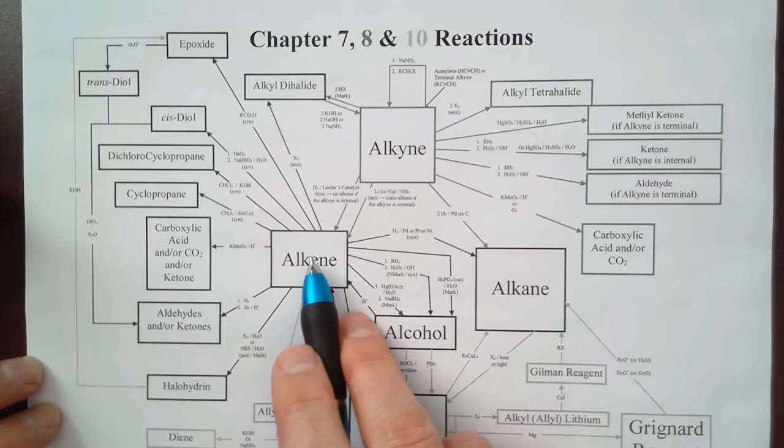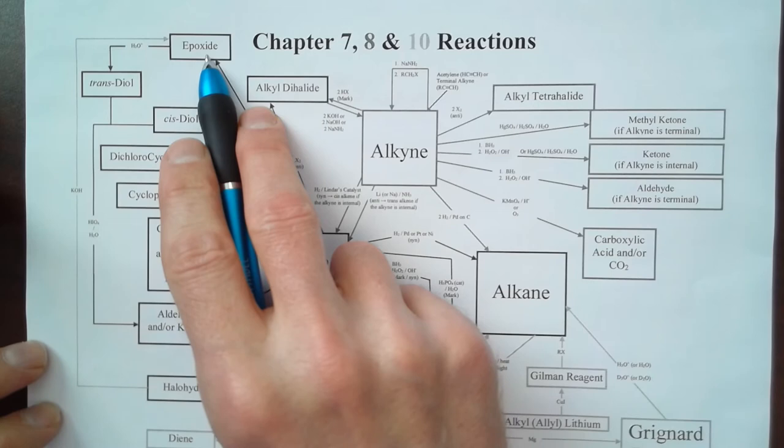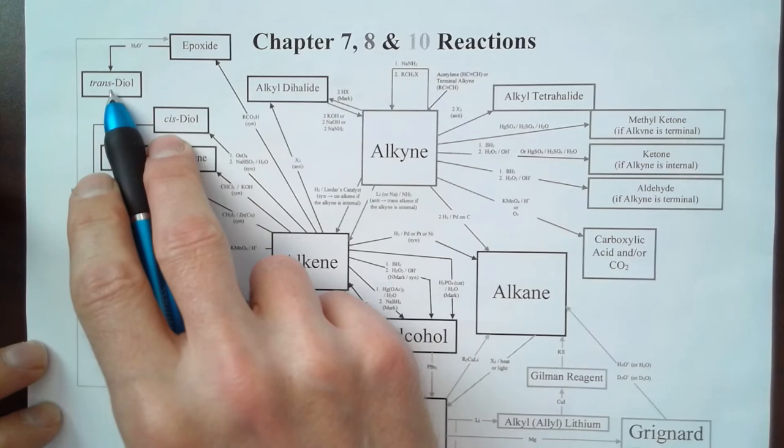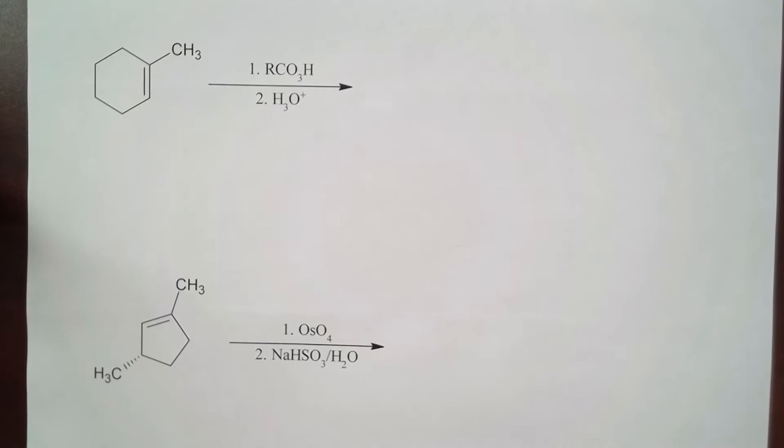So we're starting with an alkene and then if we find that we're reacting this with a peroxy acid, we get syn addition to form an epoxide. Followed by making the epoxide, we react this with an acid, an aqueous acid, and we get a trans diol. So we should end up with a product that is a trans diol after working through both of those steps.